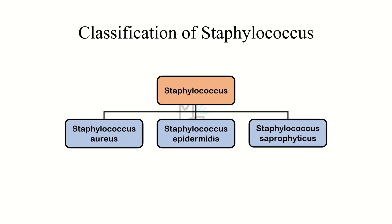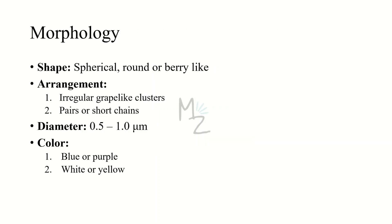Classification of Staphylococcus: it is further classified into Staphylococcus aureus, which is the most common of all three. The second one is Staphylococcus epidermidis, the topic of today's video, and the third one is Staphylococcus saprophyticus.